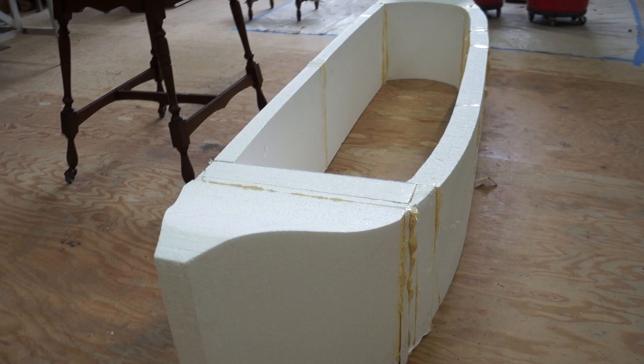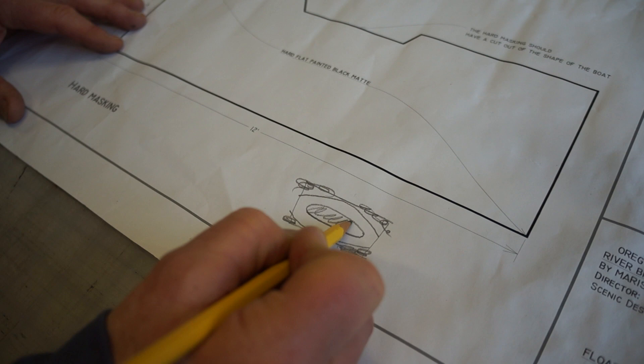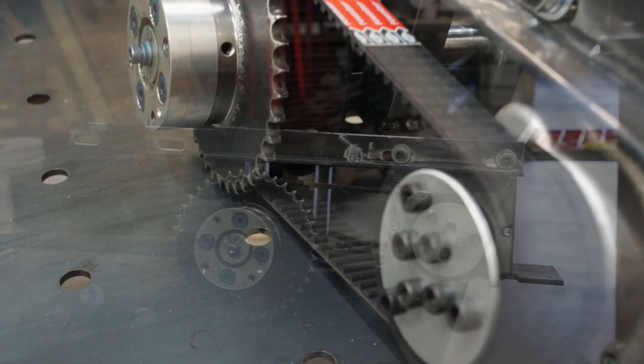One of the considerations for the boat is that it had to move across the stage. So I also had to think of how that was going to happen. The automation department had a little motor with some wheels.